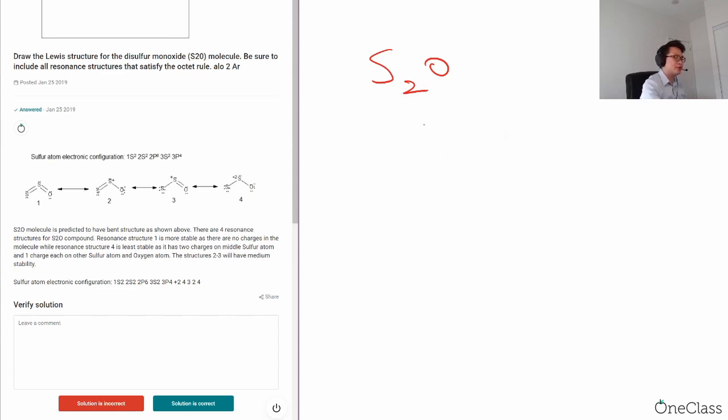Before we write out the Lewis structure, we have to find the valence electrons. So for sulfur, it should be group number... actually six. Oxygen also is six. I made a mistake over here. So six and also six. The total number of electrons will be 18 electrons.